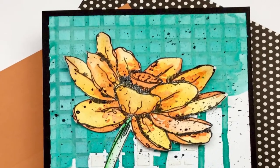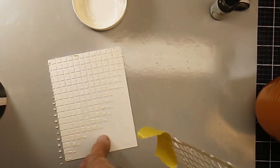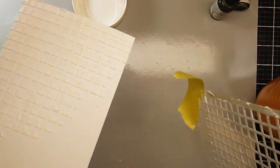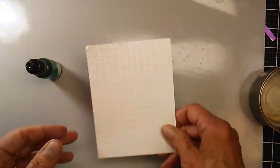I've used the grid stencil and the inked lotus stamp. You can see I started with the grid stencil and applied embossing paste through it and then let it dry.